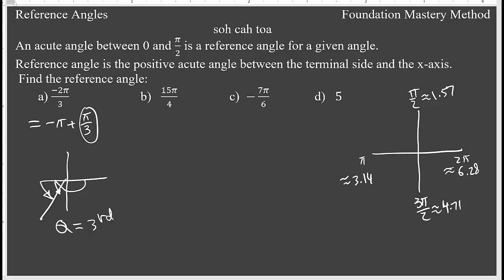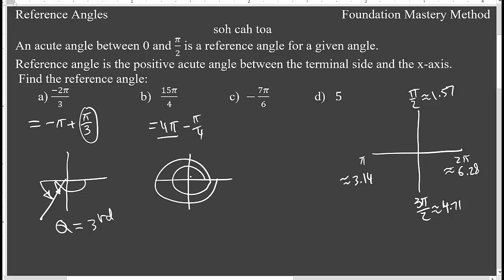Now, 15π/4 can be written as 4π minus π/4. That means two complete rotations — one, two — and then I have negative, so it's going back here. I need to measure from the positive direction, so in this case I can ignore the negative sign: just π/4 is my reference angle, and we are in the fourth quadrant.